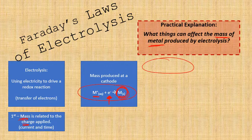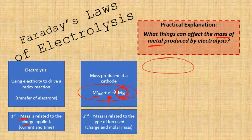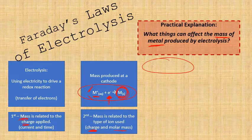The second law is around the charge on our metal ion. As in this example here, this is a one-positive ion, so you need one electron to make it a metal. If this was a two-positive ion, you'd actually need two electrons to make a metal. So therefore you're going to halve the number of moles of metal you're going to produce if it's a doubly charged ion. The mass is related to the type of ion used — that's going to be related to the charge on the ion and also the molar mass of the metal.